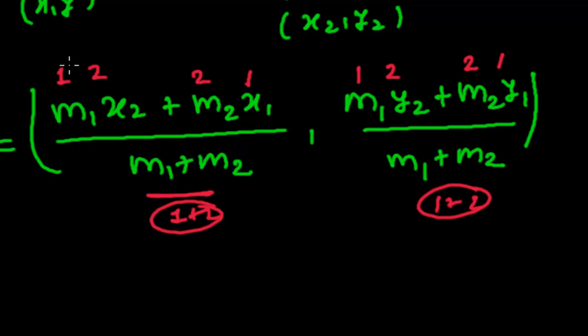So here this is the trick: once m1 is there, then there should be x2, and if there is m2, then there must be x1. So this is the trick.